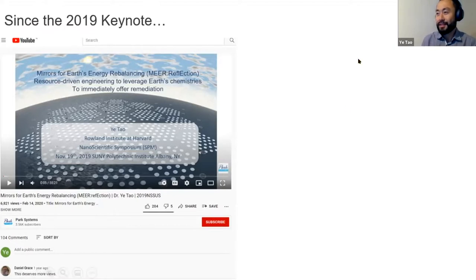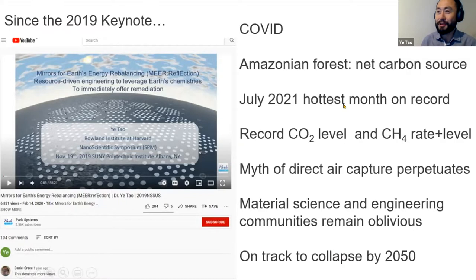Since two years, many things happened in the world. We have experienced COVID, and unfortunately nature is degrading. Amazonian forest has become a net carbon source in many portions of its territory, and we have just recorded the hottest month on record in global history. Greenhouse gases are soaring, and especially the rate of methane in the atmosphere has been increasing at a record rate.